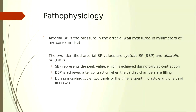Starting with some background: arterial blood pressure is basically just the pressure in the arterial wall, measured in millimeters of mercury (mmHg). The two identified values we focus on are systolic and diastolic. Systolic is that top number — it represents the peak value during cardiac contraction. Diastolic is the bottom number, representing the period when cardiac chambers are filling after contraction. During a cardiac cycle, two-thirds of the time is spent in diastole and one-third in systole.